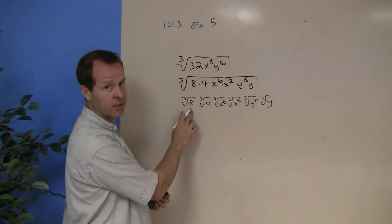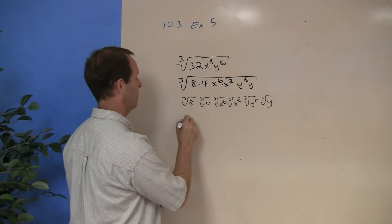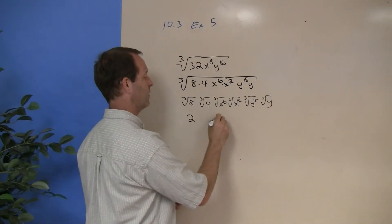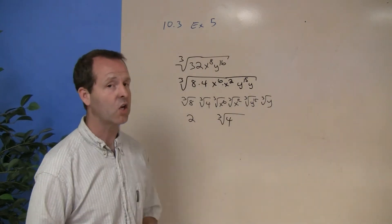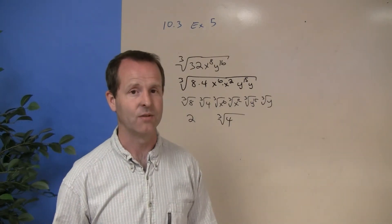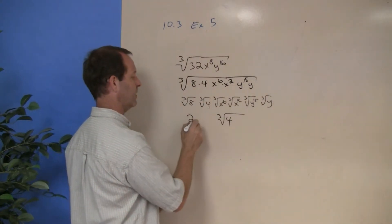The cube root of 8, perfect cube—excuse me, I've been saying squares, but perfect cube—is 2. And then the cube root of 4. 4 can't get out. The cube root of 4 is not 2. The cube root of 4 is just the cube root of 4.